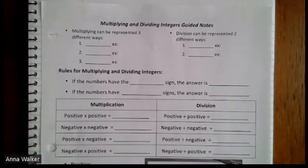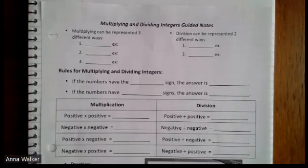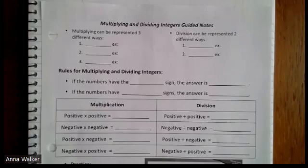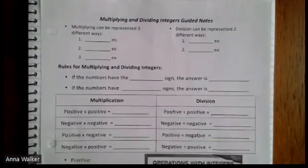So today we're going to talk about what happens when we multiply and divide positive and negative numbers. You may be thinking, I don't think we've learned subtraction yet — we just learned addition, shouldn't we learn subtraction? I like to say subtraction for last because it's complicated and kind of hard. So in this video, let's talk about multiplying and dividing because it is much quicker and much easier to understand. We are going to fill out this graphic organizer and then tape it into our notebook.